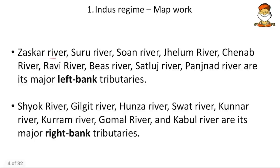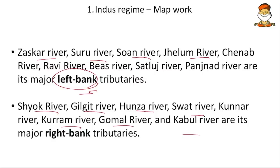The left bank tributaries include Zanskar, Suru, Swan, Jhelum, Chenab, Ravi, Beas, and Sutlej. The right bank tributaries include Shyok, Gilgit, Hunza, Swat, Kunar, Kurram, Gomal or Gumal, and Kabul rivers. Whichever rivers we didn't discuss on the map is an assignment — go through Google Maps and locate all these rivers. Afghanistan is also in current affairs because of the Taliban takeover, making this especially important.